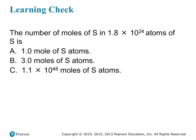Now let's do another problem. We're trying to figure out the number of moles of sulfur, and we're told that we have 1.8 times 10 to the 24th atoms of sulfur. The options are: A) one mole of sulfur atoms, B) three moles of sulfur atoms, or C) 1.1 times 10 to the 48th moles of sulfur atoms. This time we're starting with the number of atoms and trying to get to moles.